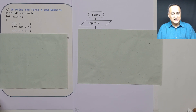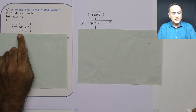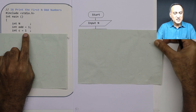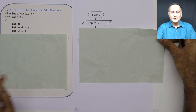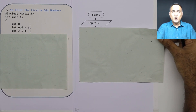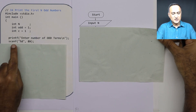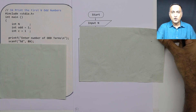First, what I am doing is I am defining the initial odd number as 1. This count c is used to keep track of how many odd numbers I am printing so far. Since I have not printed any odd numbers, initially it is kept at 1. I am asking the user to input n — how many odd numbers he or she would like to see printed. The statement is: enter the number of odd terms, and that value is entered into n.